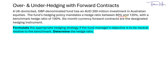Six month currency forward contracts are the designated hedging instrument. In the question, you are required to formulate the appropriate hedging strategy if the fund manager's objective is to be neutral relative to the benchmark and determine the hedge ratio.